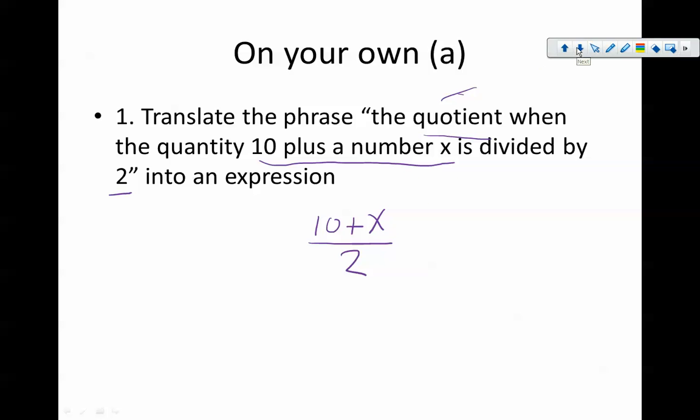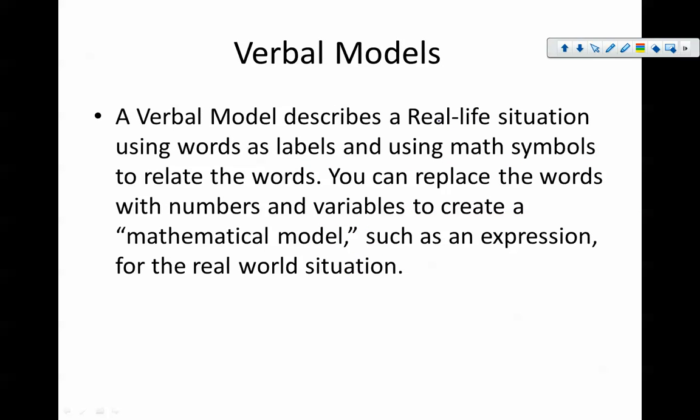Let's move on to the next set here, and that is a verbal model. What we mean by a verbal model is that we are going to describe a situation using words as labels, and then later we can replace those words with numbers and variables to create the model or an expression for whatever this real-world situation is. The important part is that we recognize that we can take some steps in between a written-out situation and an equation.